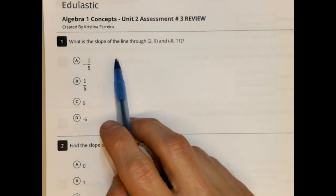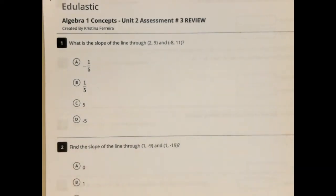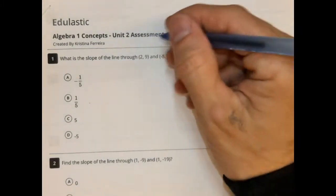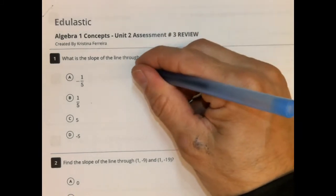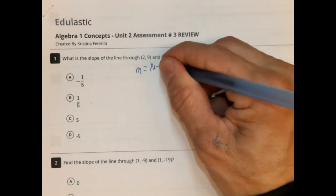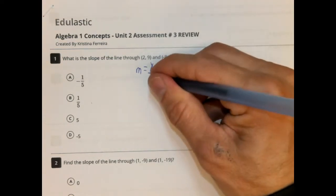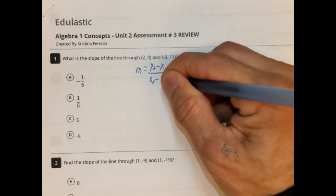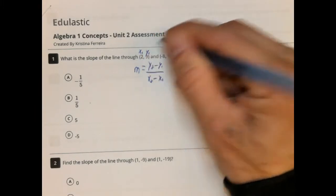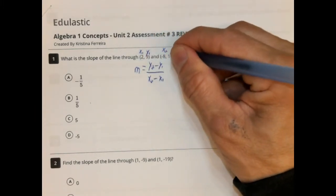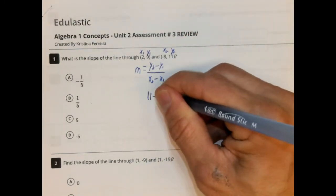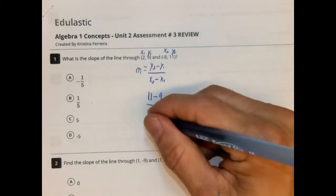This first problem is asking us to calculate the slope of a line that has these two points: (2, 9) and (-8, 11). So let's remind ourselves of the formula, which is m equals y-sub-2 minus y-sub-1 over x-sub-2 minus x-sub-1. So we have to label our points: x1, y1, and x2, y2. Let's plug these points in. So we have 11 minus 9 over negative 8 minus 2.